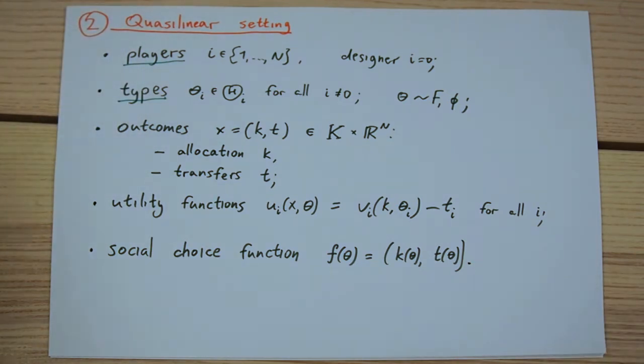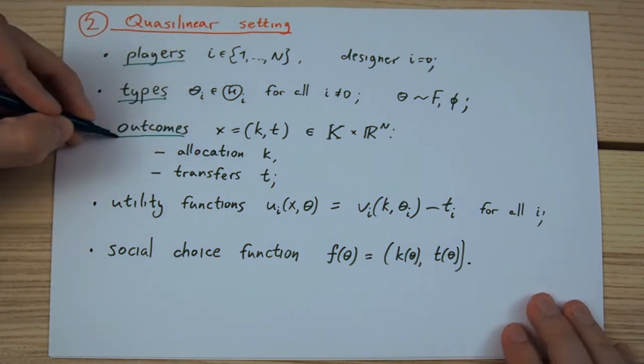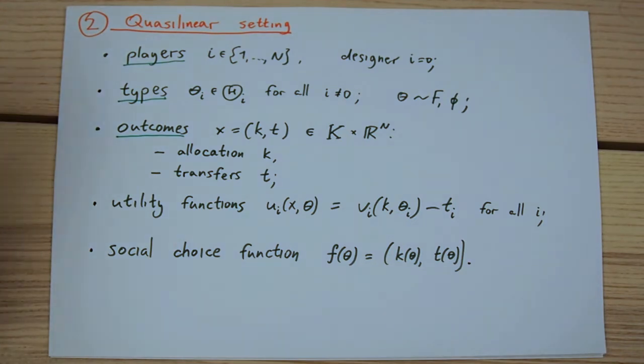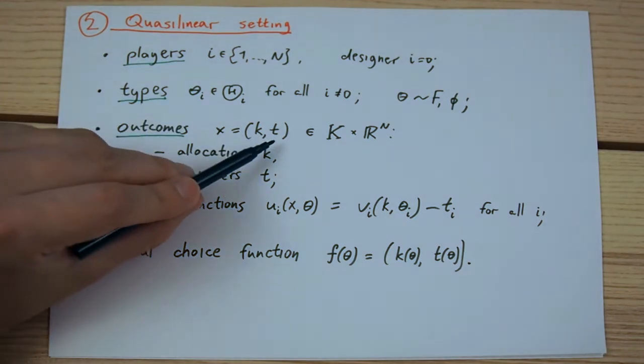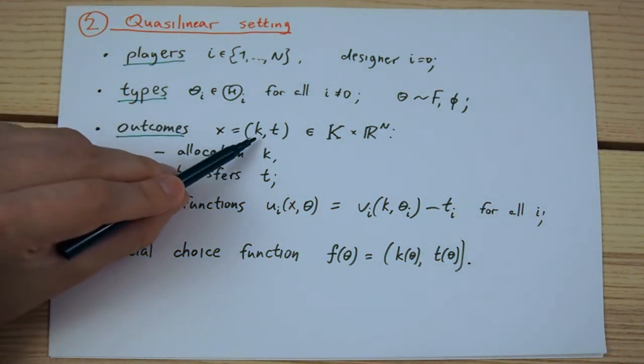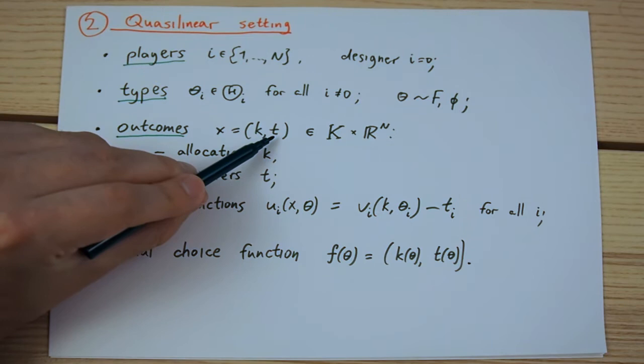Now, however, we impose additional structure on the set of outcomes. Namely, we assume that it consists of two elements. The first is the allocation k. You should perceive this as some real decision that must be made in this environment.